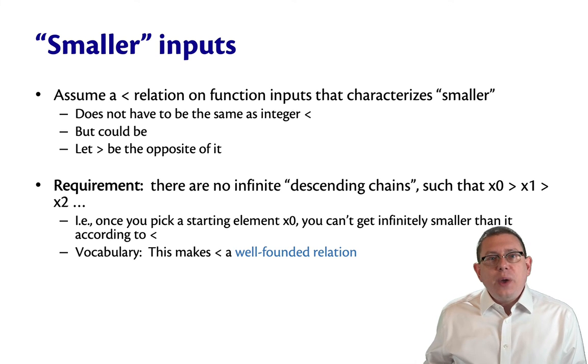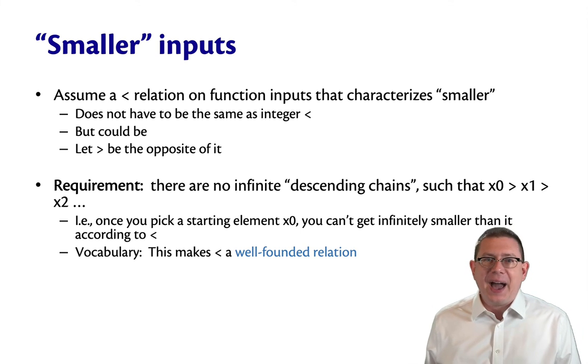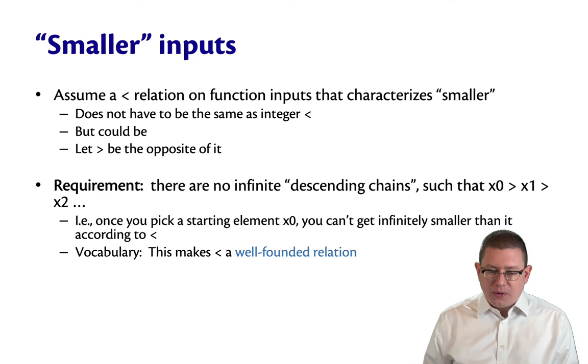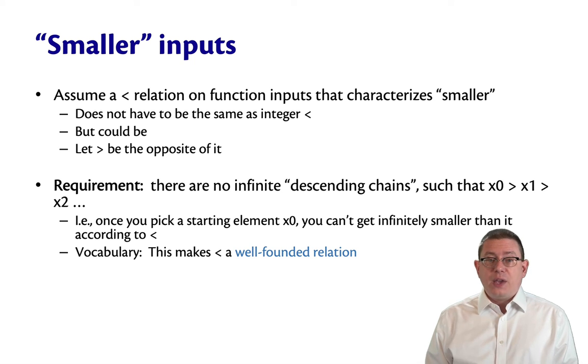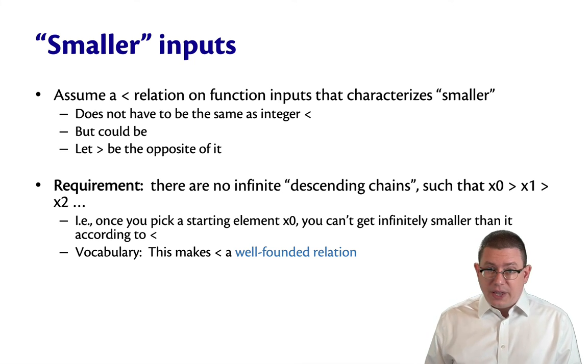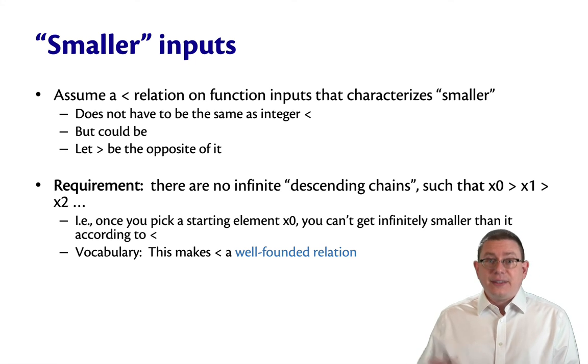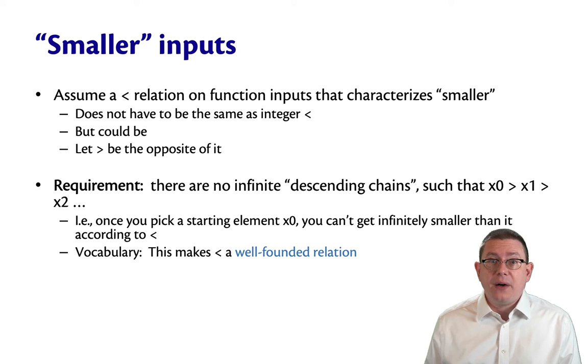If there's no infinite descending chains, then you eventually get to the bottom somehow, according to this relation. You can't get infinitely smaller than it. Okay, in mathematics, that makes this less than that we're thinking about what's called a well-founded relation. So the intuition of well-founded there ought to be just that, that you can always get to the bottom of it.